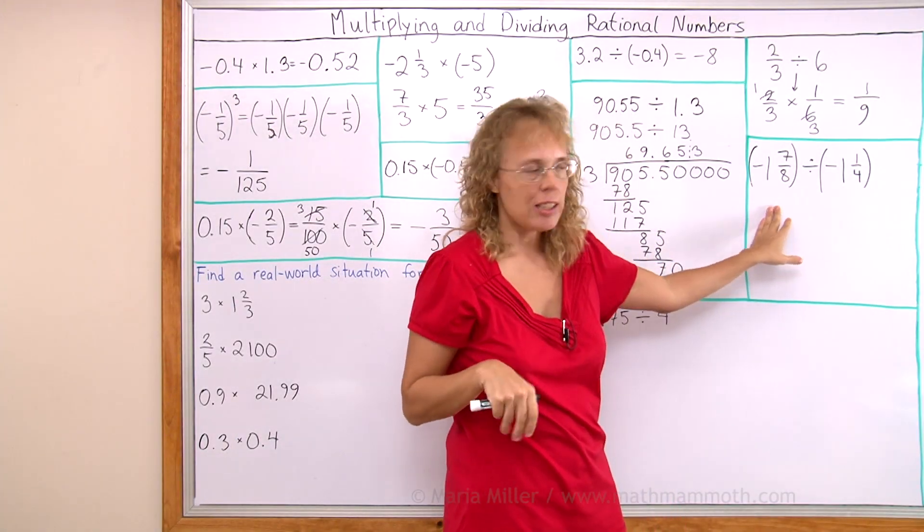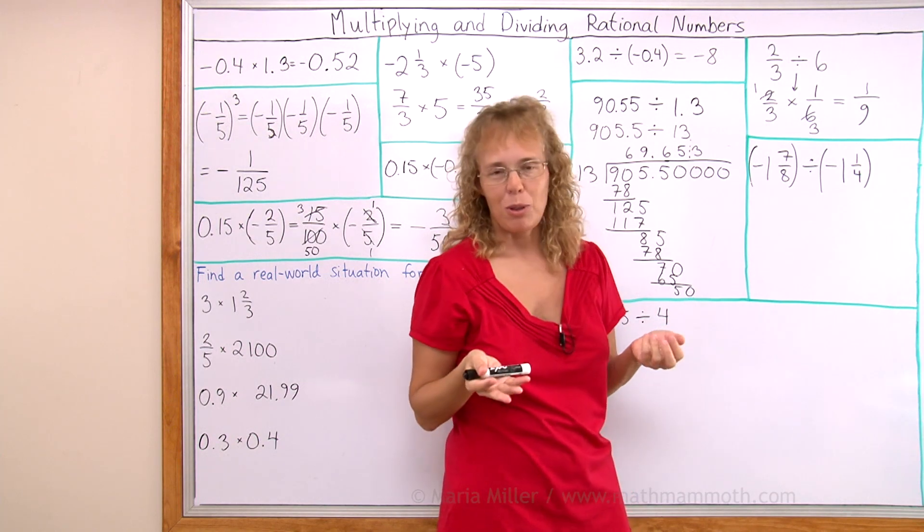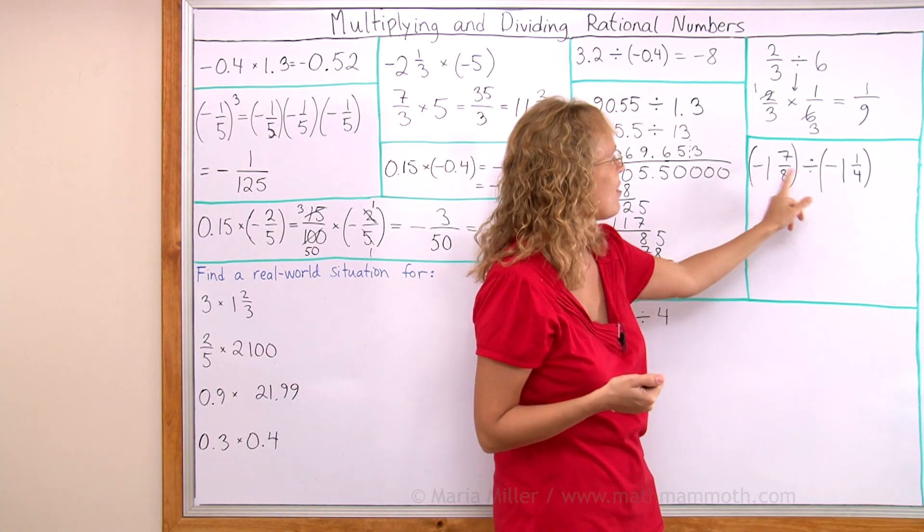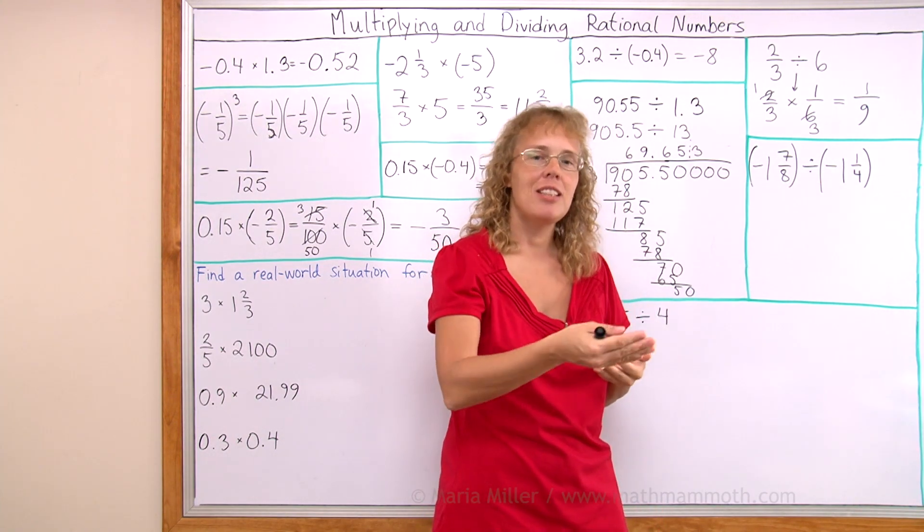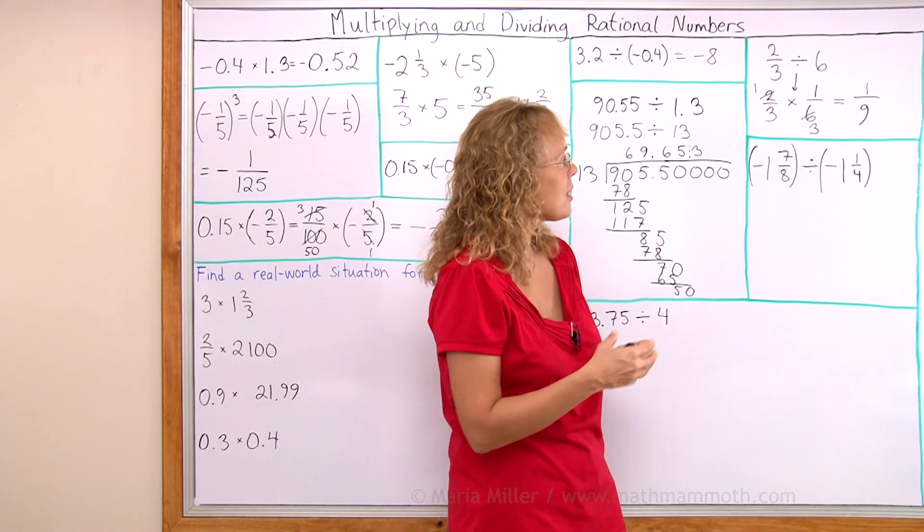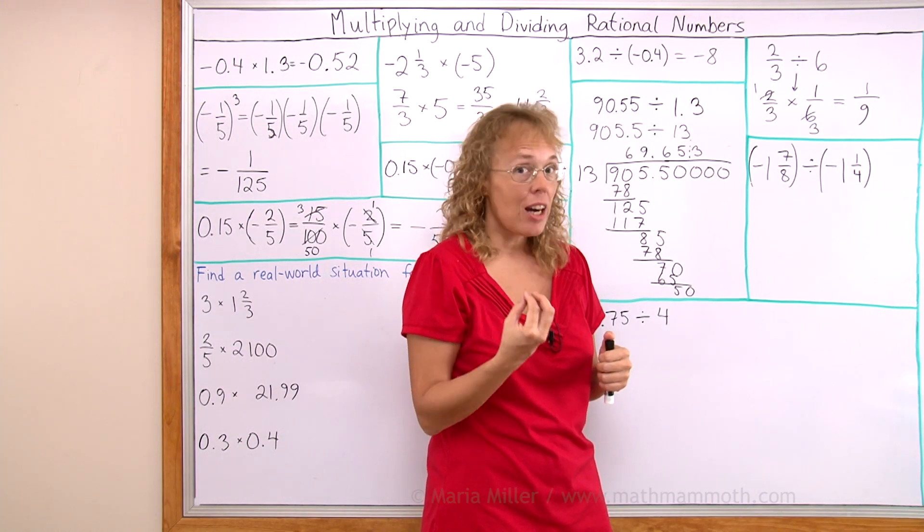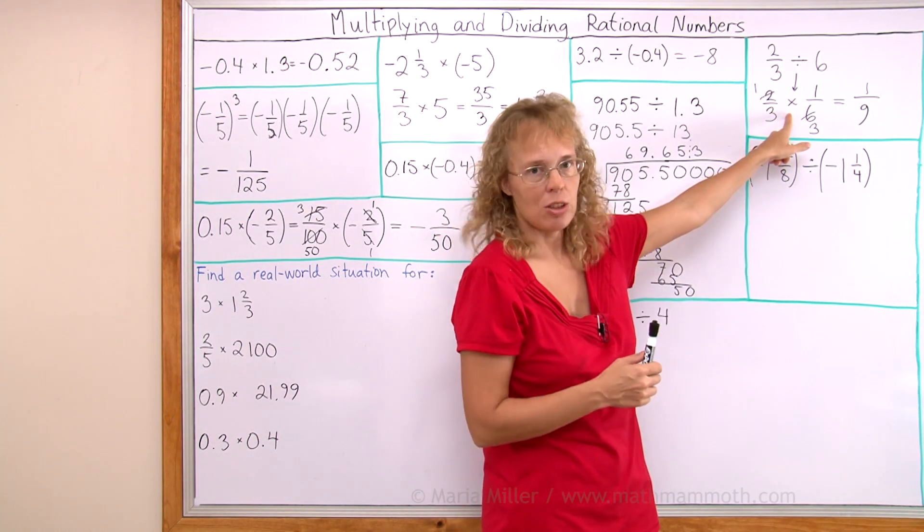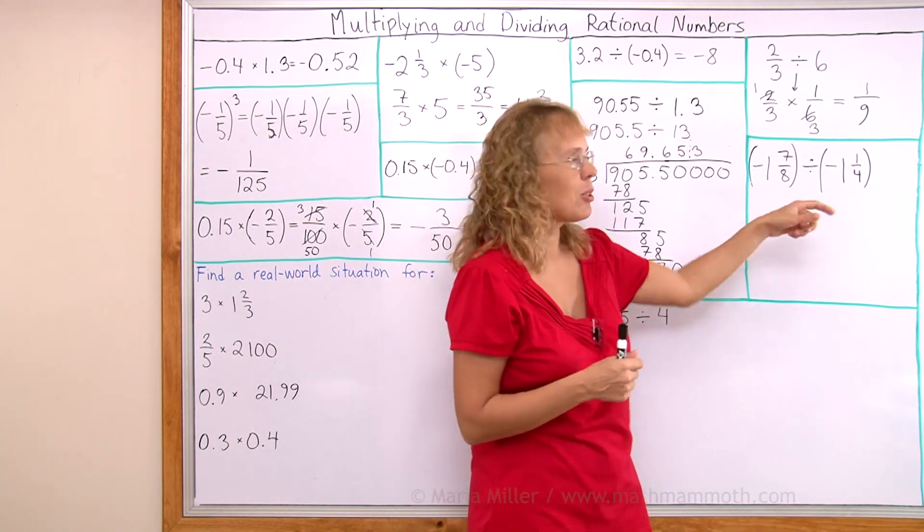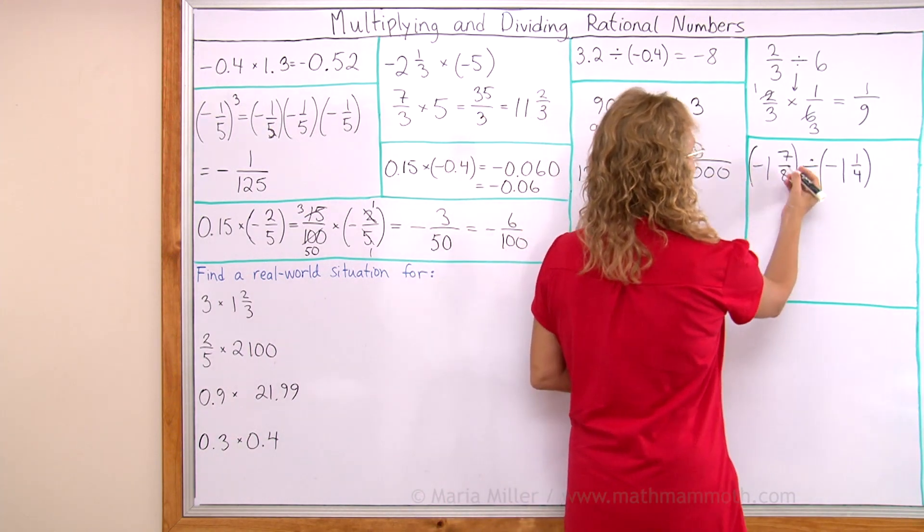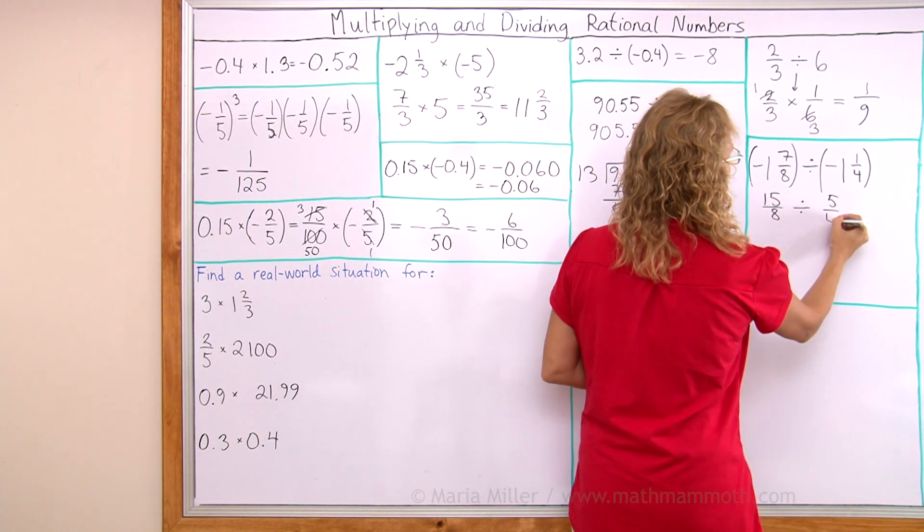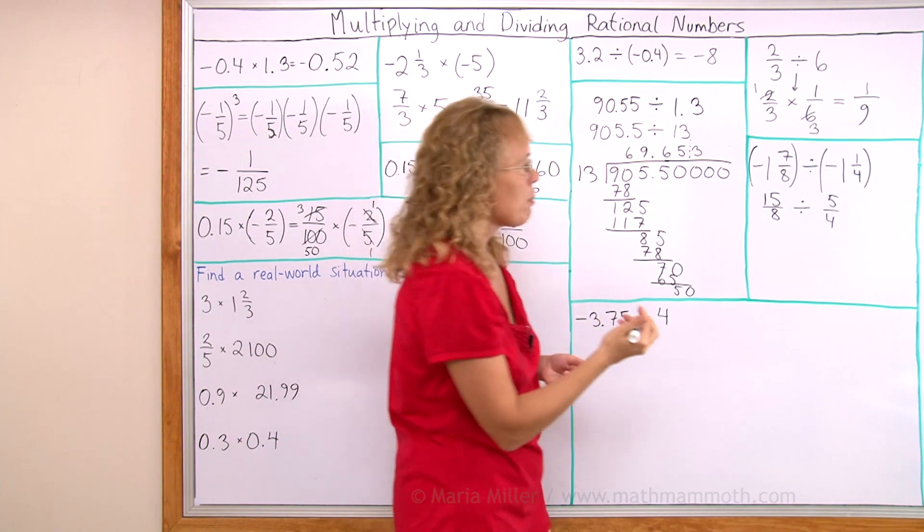Here I tried to create as difficult a fraction division problem as I could. Does it look very difficult? Not really. You know, there's a negative and a negative. But when you divide negative by negative, you get a positive answer. So we can just ignore those negatives from the start. And then it is just two mixed numbers. To divide fractions, you need to change it into a multiplication. But even before that, since it's mixed numbers, we change the mixed numbers into fractions first. So here we get 15 over 8 divided by 5 fourths. And notice, I just dropped the negatives because I know the answer will be positive.